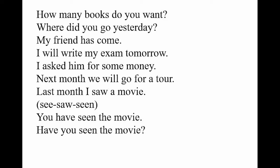My friend has come — 'has come' is present perfect tense. Whenever it is present perfect tense, we use has or have plus the third form of the verb. 'Come' — the forms are come, came, come. We use 'has' because 'friend' is singular. Supposing it was 'my friends,' then it would be 'my friends have come.' So: singular uses 'has,' plural uses 'have.'